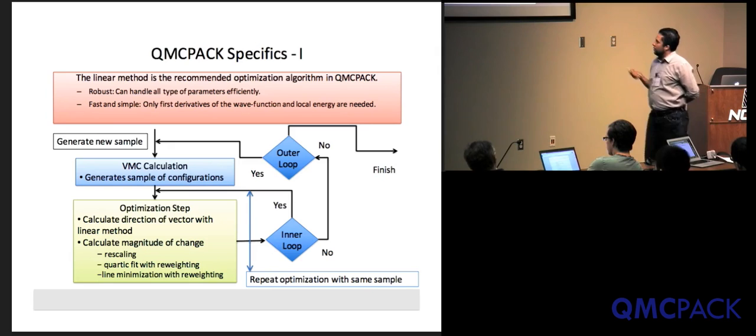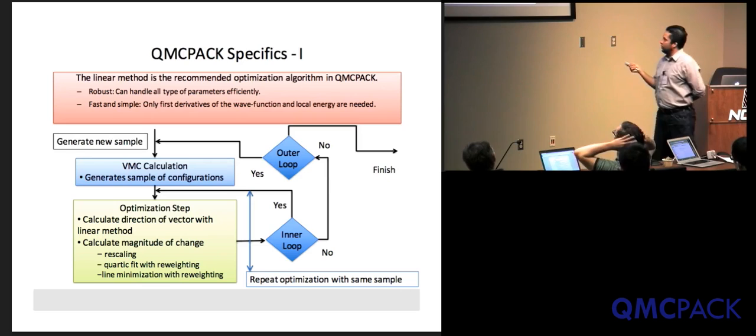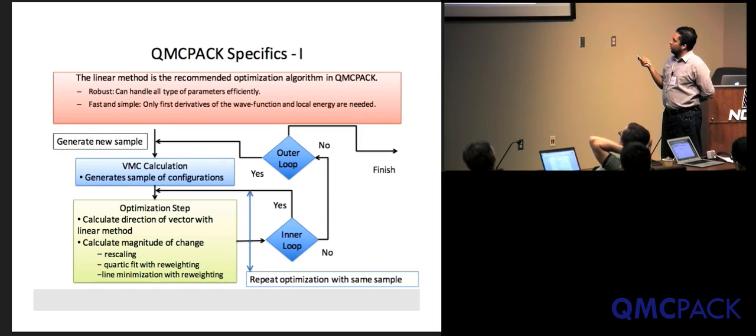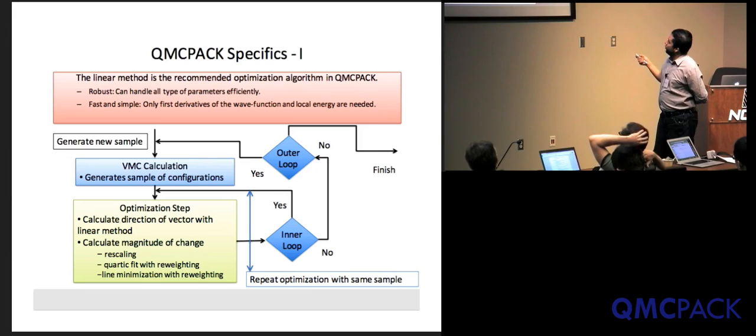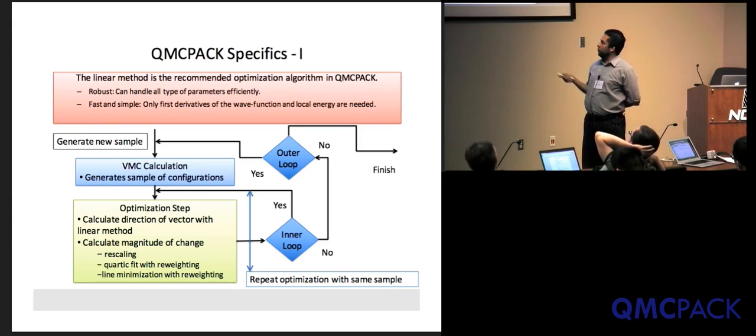Once you generate the samples, you go into the actual optimization step. The code reads back configurations and does whatever method you request — linear method or steepest descent. It calculates the direction for linear optimization and then takes a step using either rescaling, the quartic fit, or direct line minimization. You can stay with the same set of configurations and redo this step several times (the inner loop), or go back and regenerate VMC configurations. The frequency of these two loops is your choice. I personally always regenerate VMC configurations since the VMC step is not the bottleneck. When you're done, you move on to DMC or whatever method you want to use the optimized wave function on.